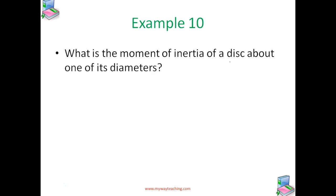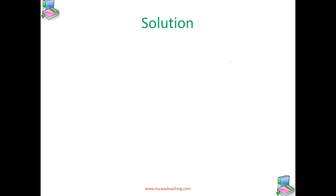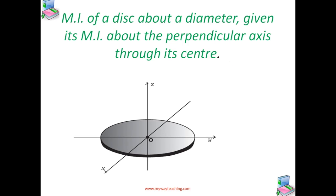Let us now consider a simple problem: what is the moment of inertia of a disc about one of its diameters? We assume the moment of inertia of the disc about an axis perpendicular to it and through its center to be known. It is given by MR²/2, where M is the mass of the disc and R is its radius. We get this value from the standard table considered previously.